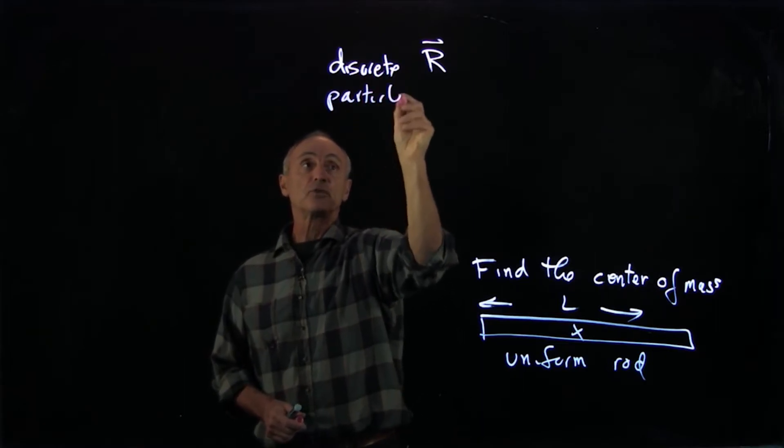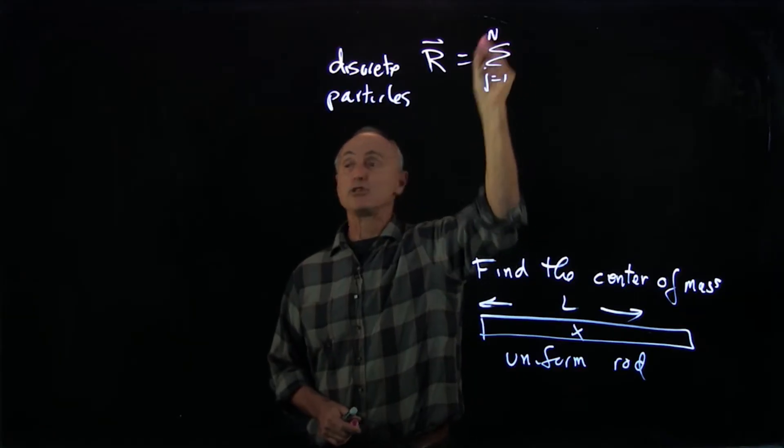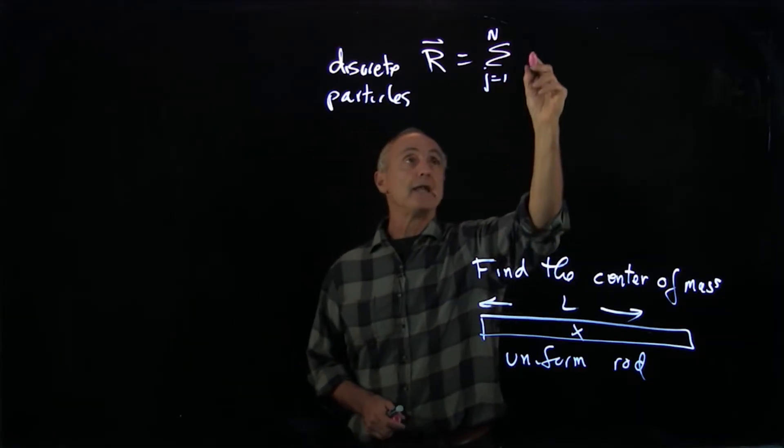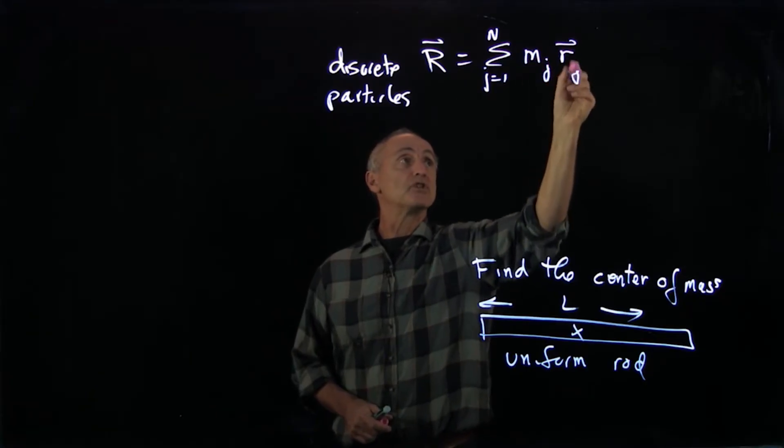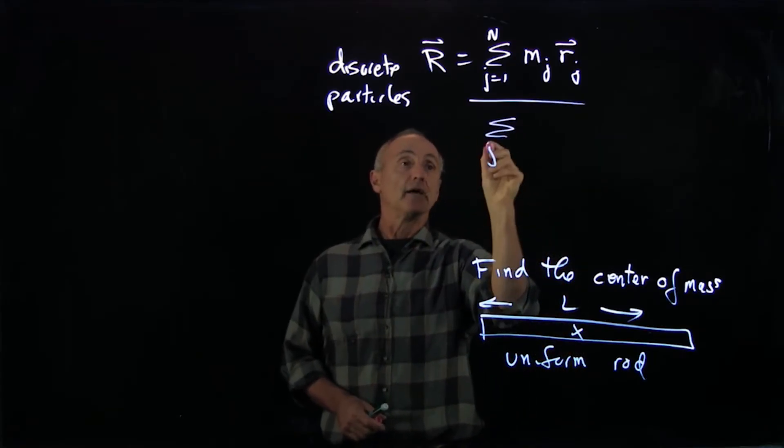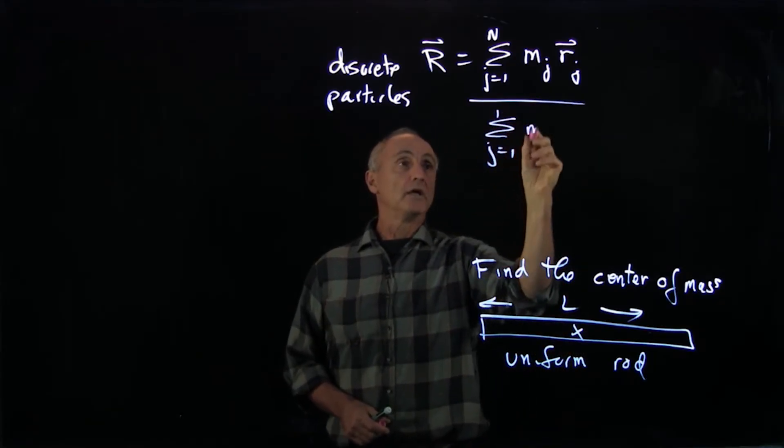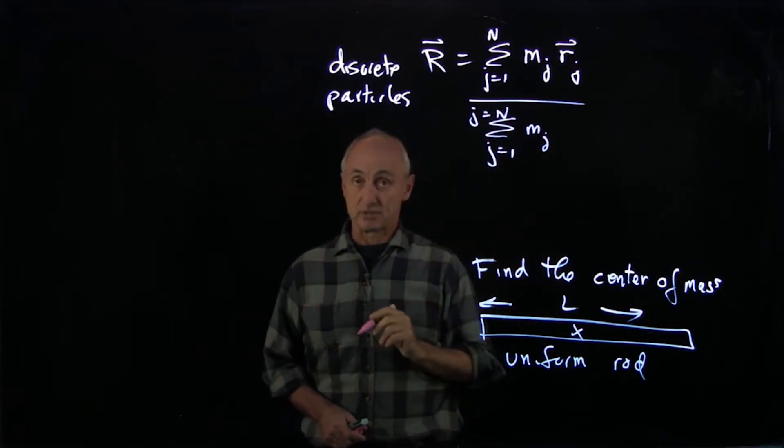Recall that this was a sum over all the particles in the system. We'll take a label j goes from 1 to n, and it was the mass of that j-th particle times the position vector of that j-th particle with respect to some origin, and we're dividing that by j goes from 1 to n of the total mass in the system.